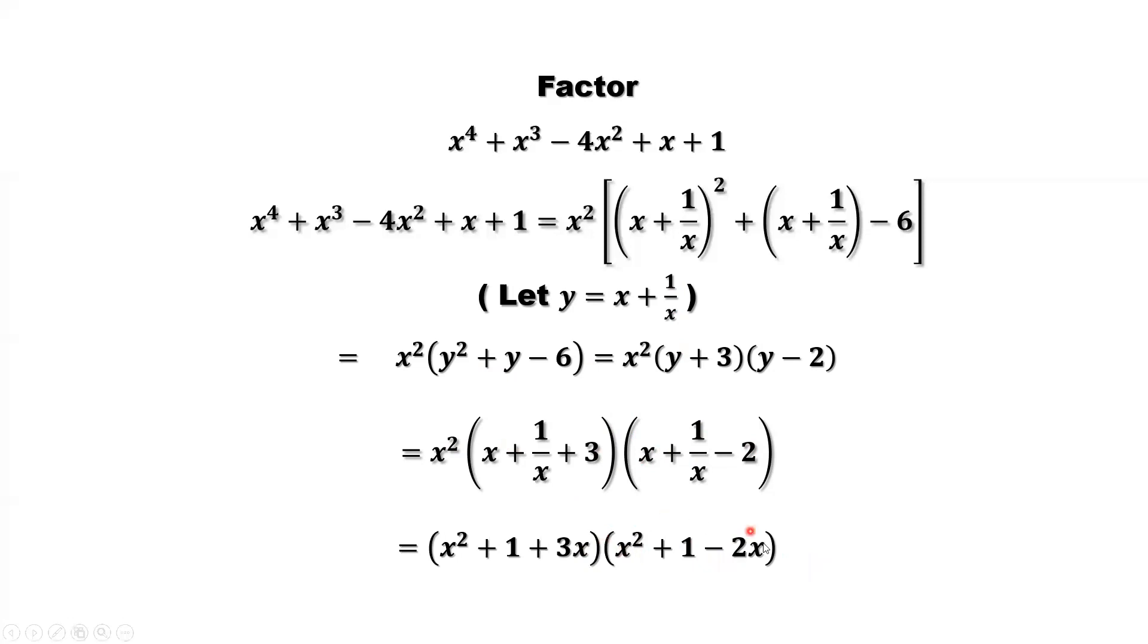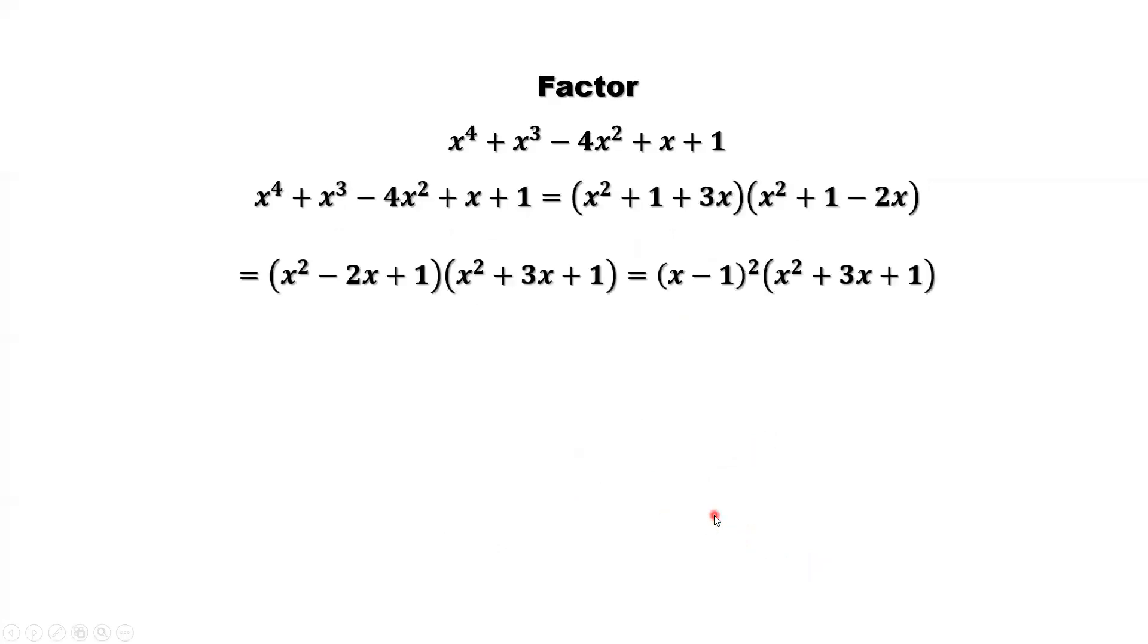So here, consider this. What is this? This is a perfect square, complete square. That's x minus 1 squared. Second part, we cannot go further to factor this. So this is the final answer. This is the answer for the given polynomial.